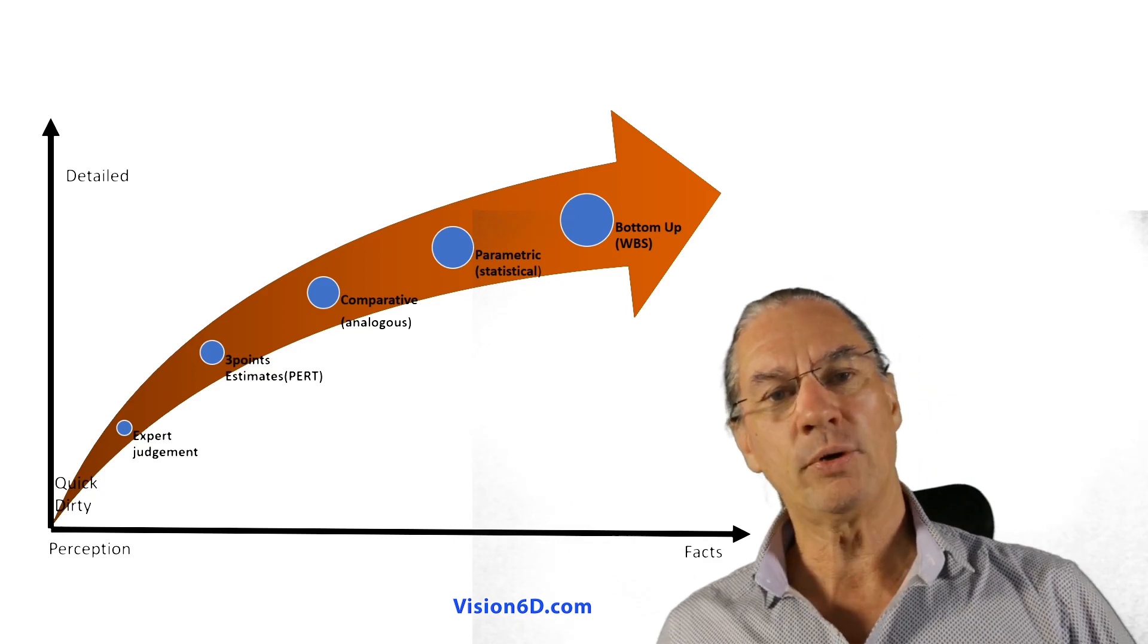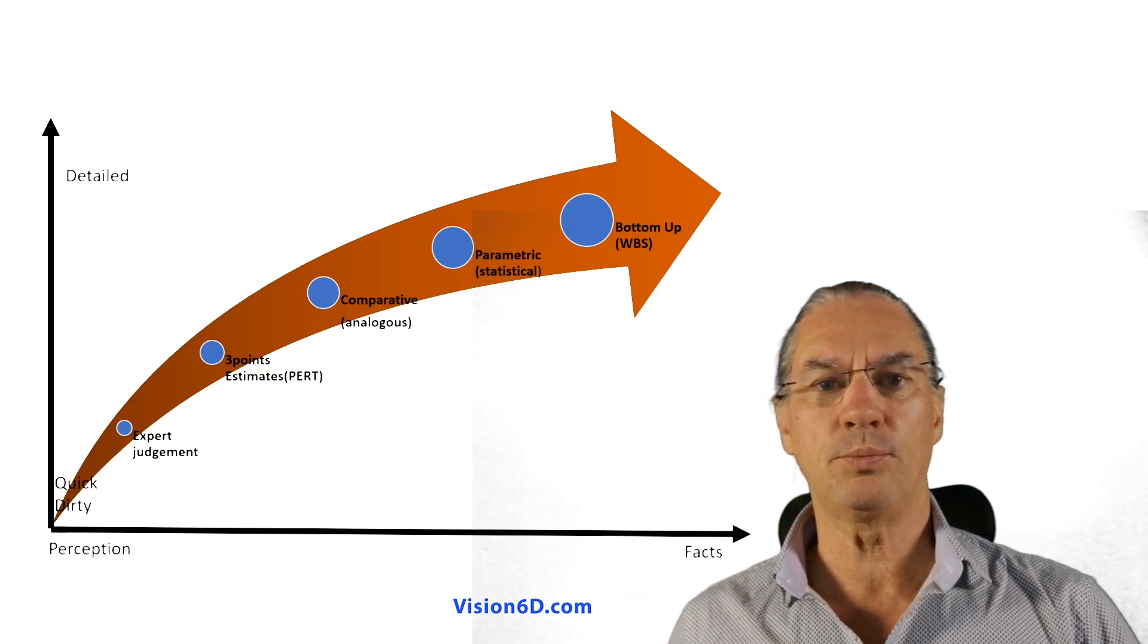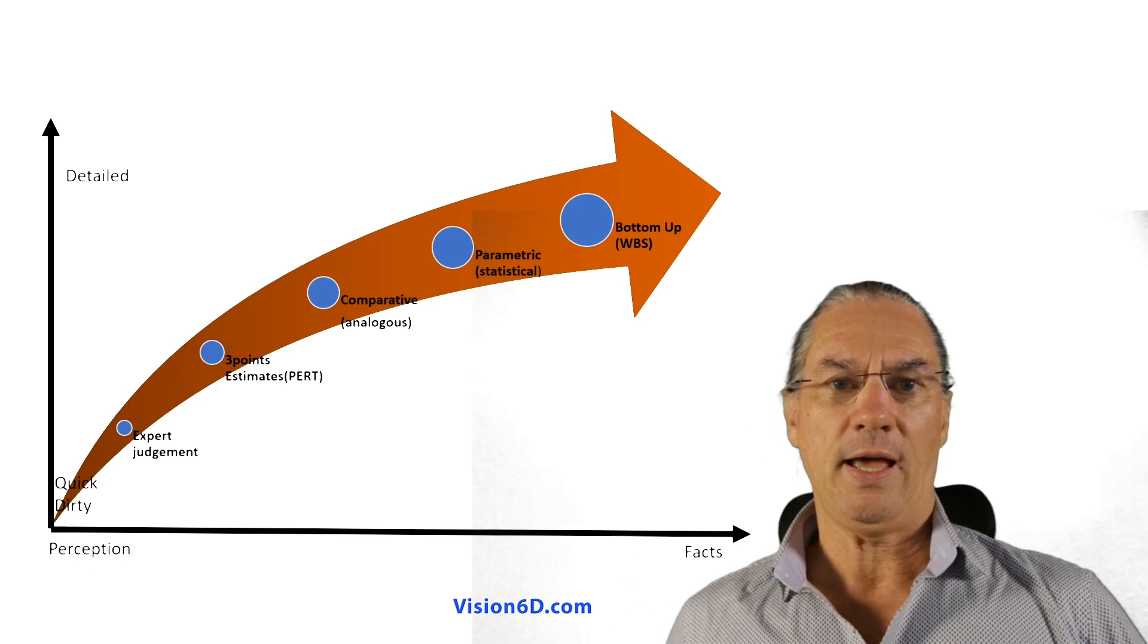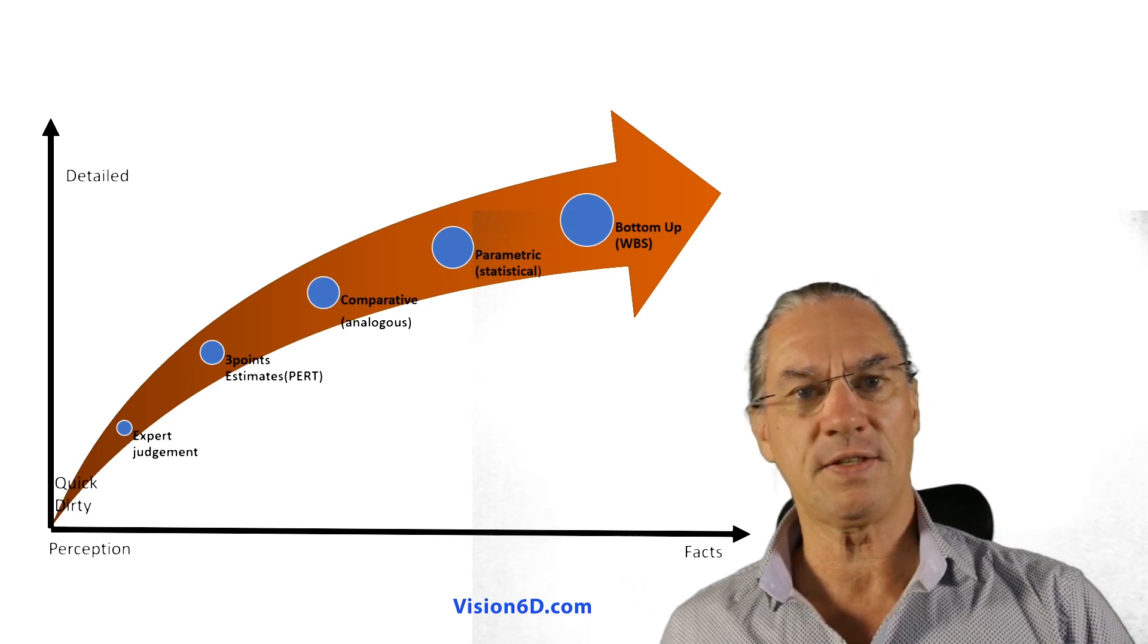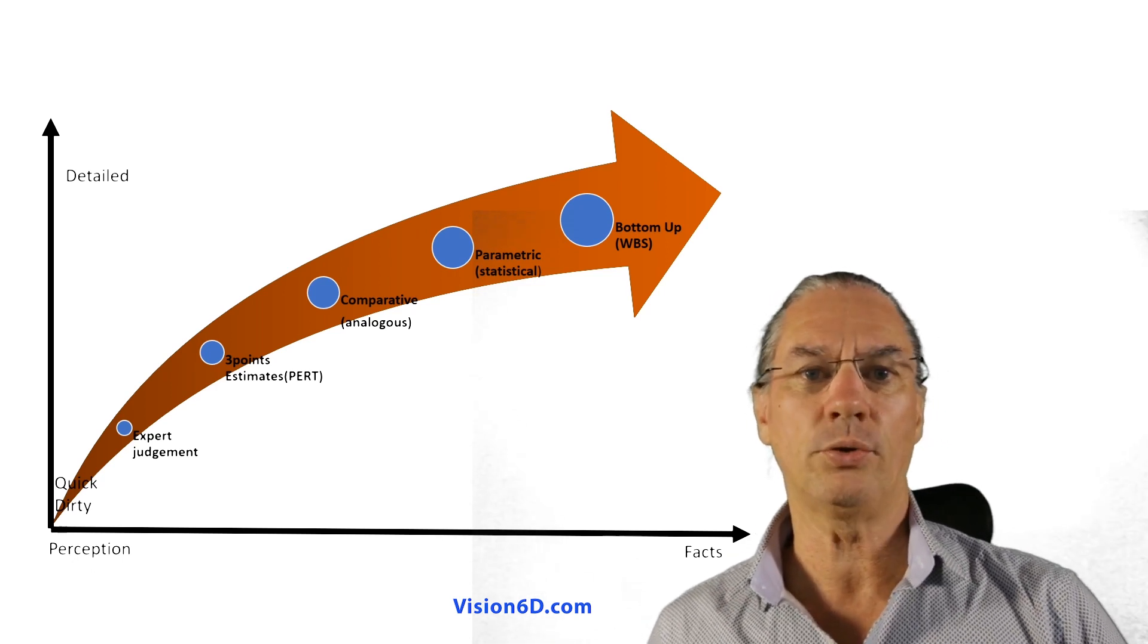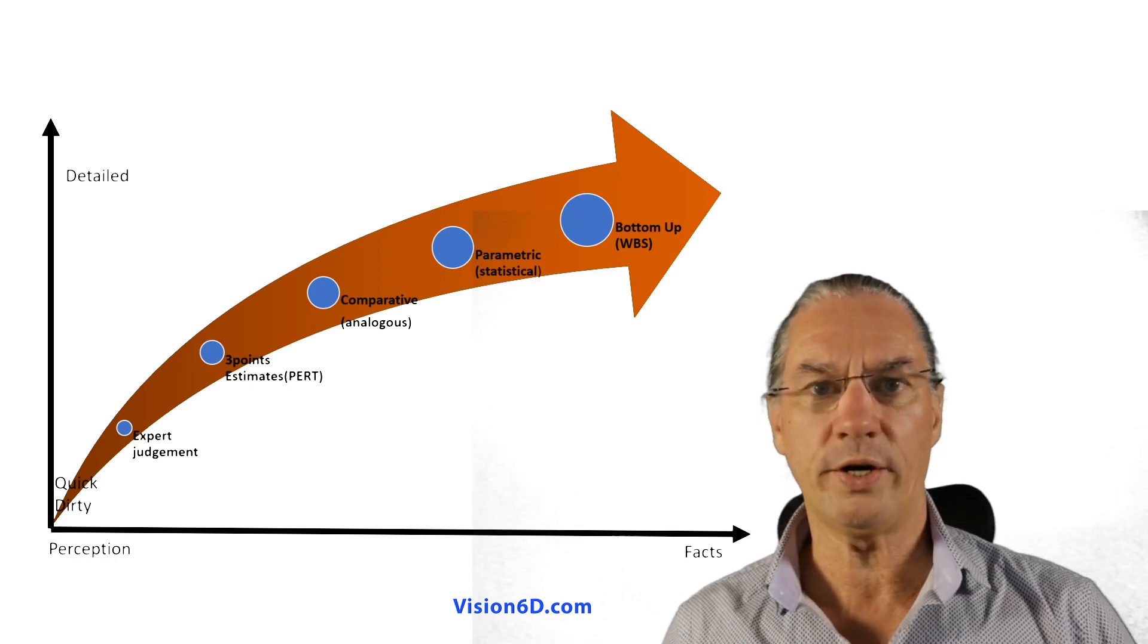The parametric one is one that is computed, calculated and is based on statistics. I won't enter into it, but be aware that it exists.